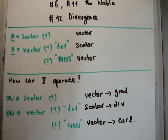It can do three operations: it can operate on a scalar, or it can operate on a vector, and once again it can operate on a vector in one of two ways. It can operate using the dot product or the cross product.